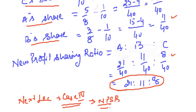So be careful in the examination. When a question is asked on calculation of new profit sharing ratio, first remember all the cases and correlate which case the question belongs to. Put the question into the pizza example — that will simplify it and help you identify which case it falls under. Thank you friends.